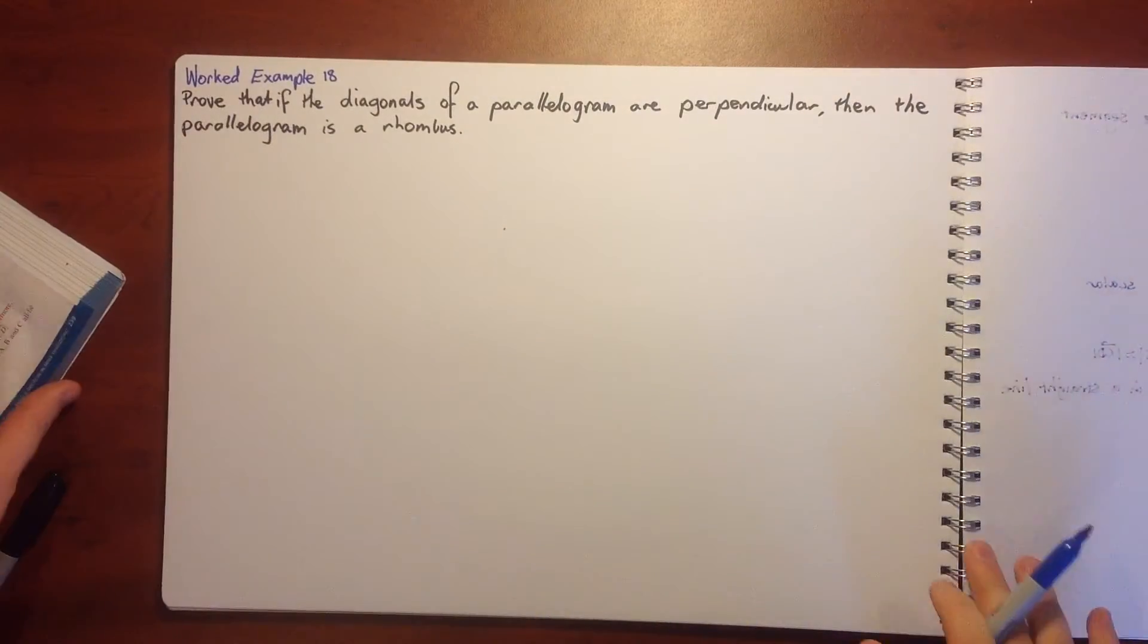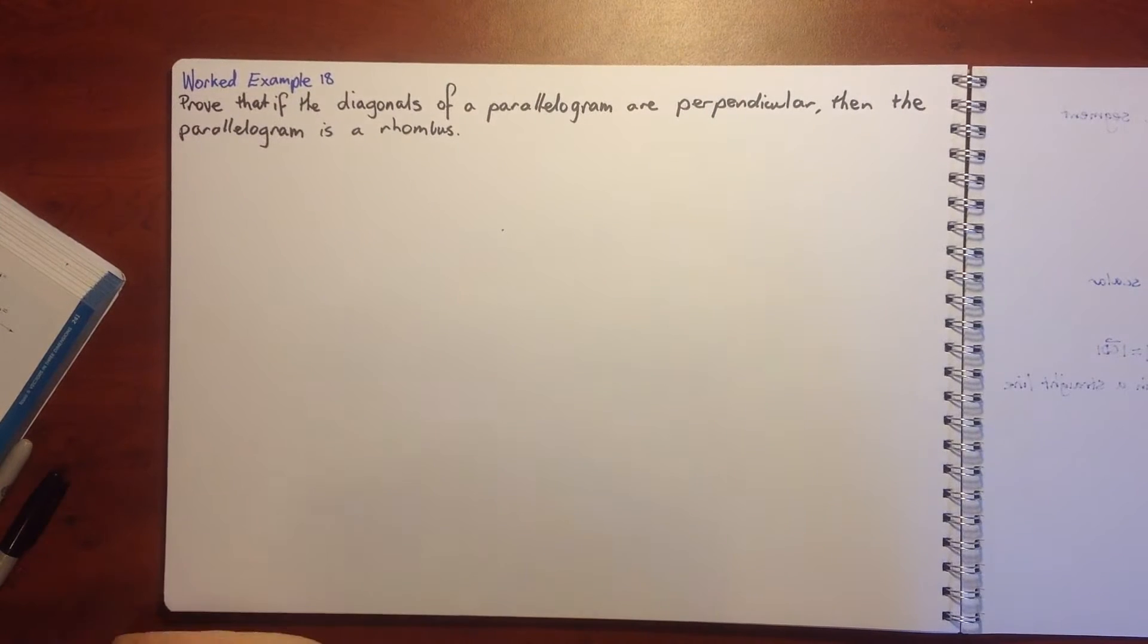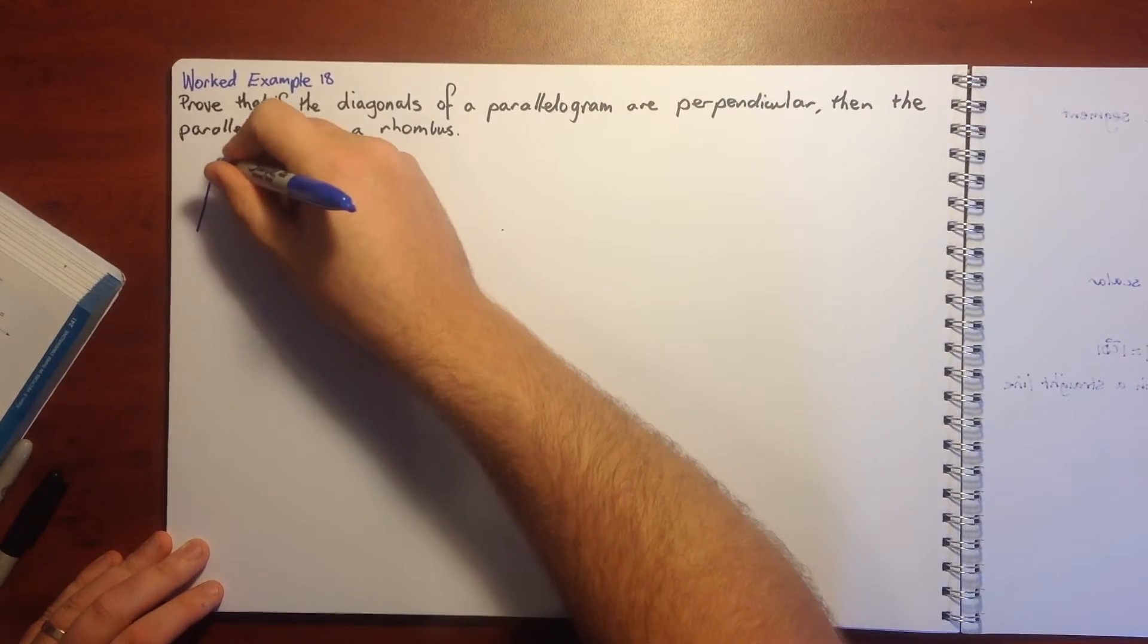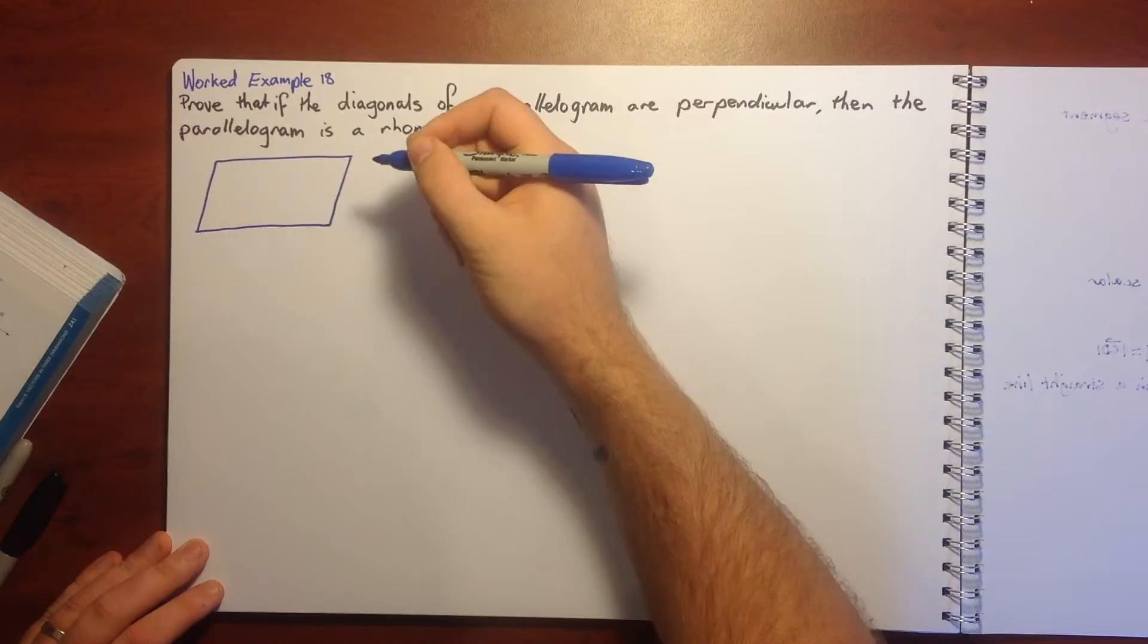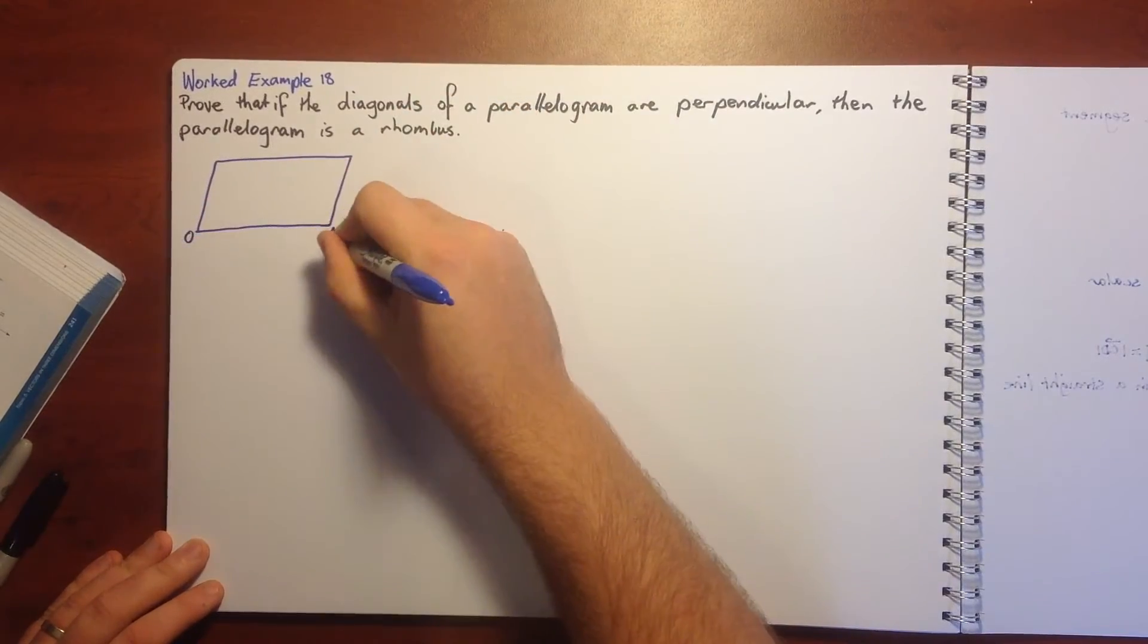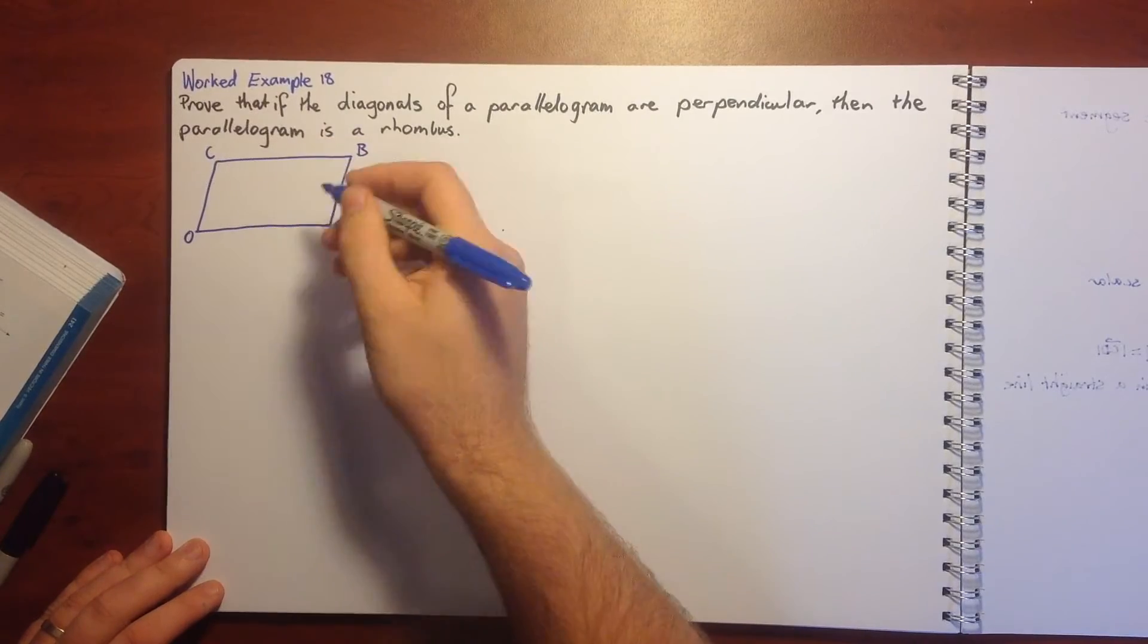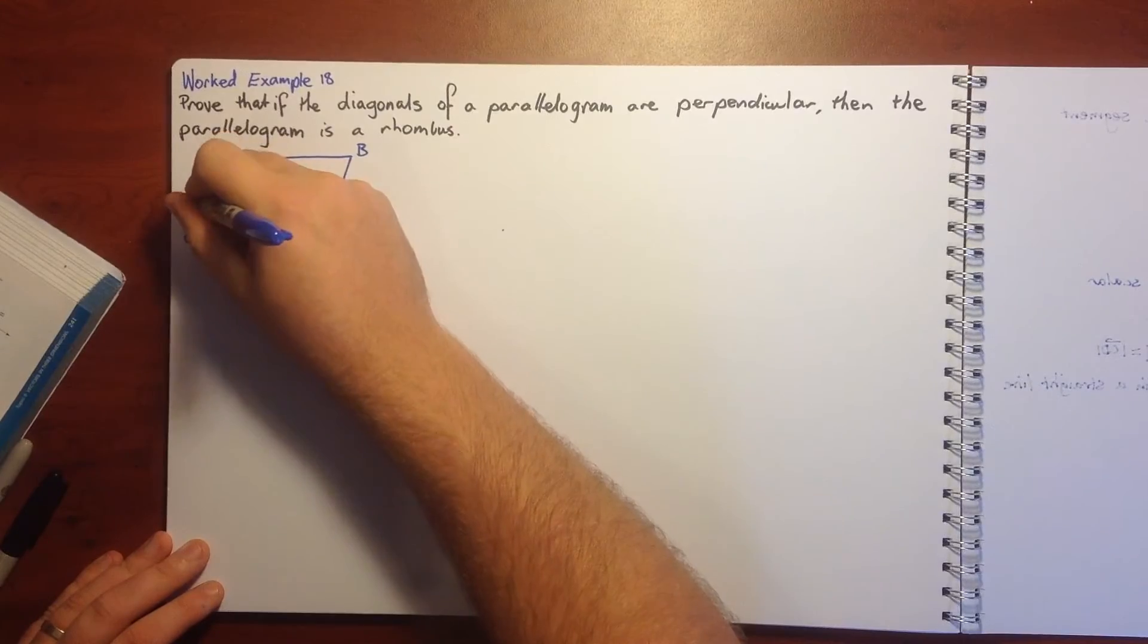We'll have a look at example 18. Prove that if the diagonals of a parallelogram are perpendicular, then the parallelogram is a rhombus. Let's draw a little picture. We've got our parallelogram O, A, B, and C.